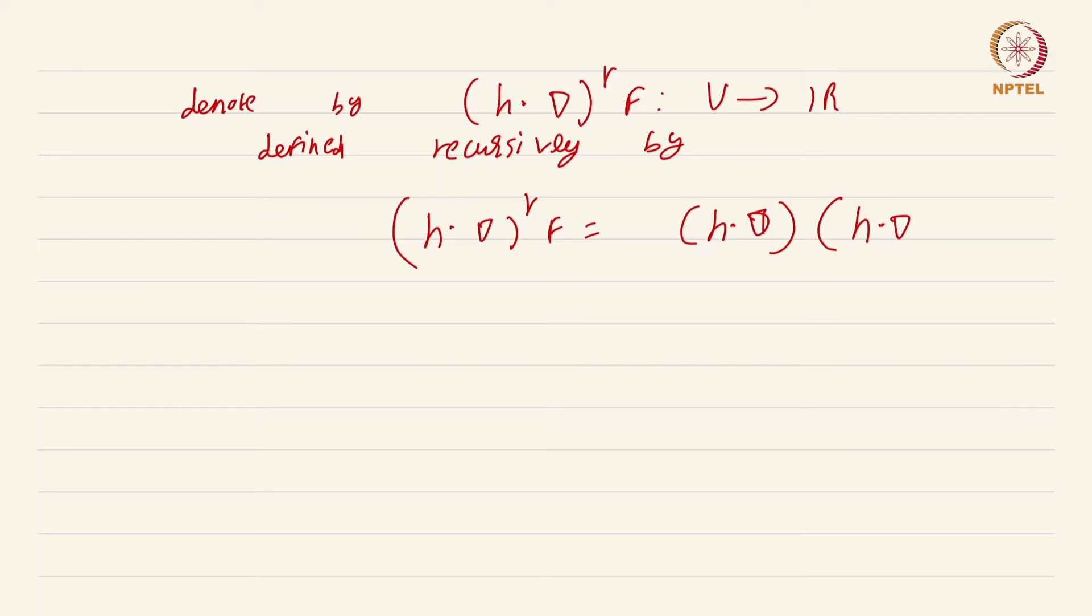h dot grad power r f is equal to h dot grad acting on h dot grad power r minus 1 of f. So what is essentially happening is recursively this object h dot grad power r minus 1 acting on f is a function from u to r, then you take h dot grad of that. You require r to be less than or equal to k because when you work this out you will notice that derivatives up to order r will occur.